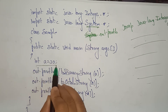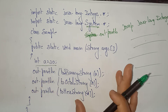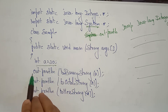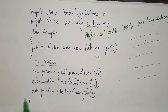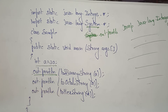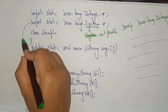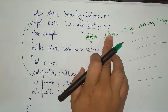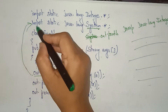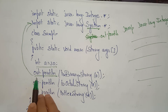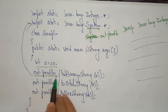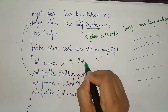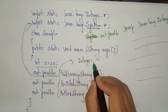In the program, class Sample, main method — int a equals 30. I am not writing System dot; I am writing only out.println because I already imported java.lang.System.*. Similarly, I am not writing Integer.toBinary — because Integer is already imported.